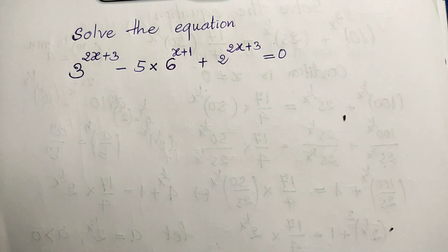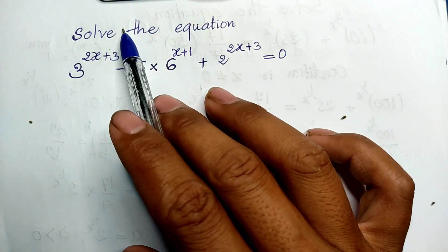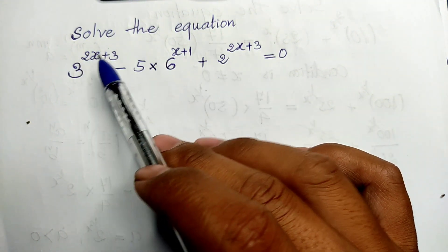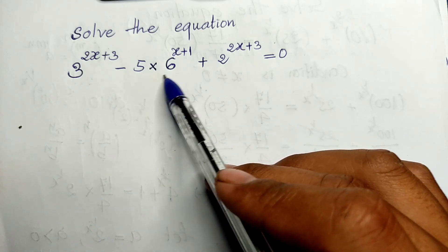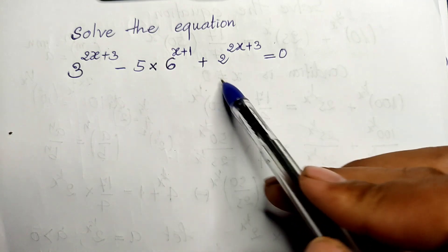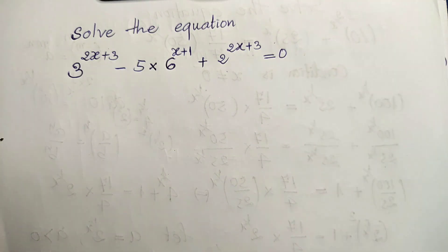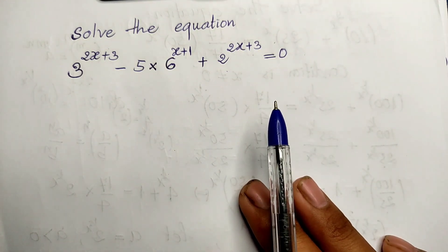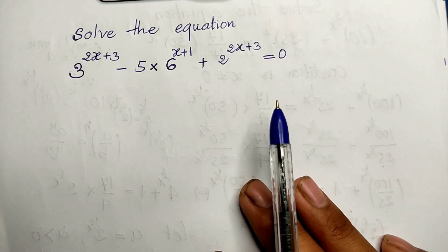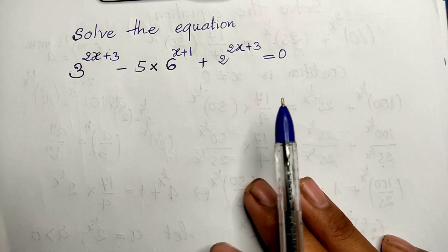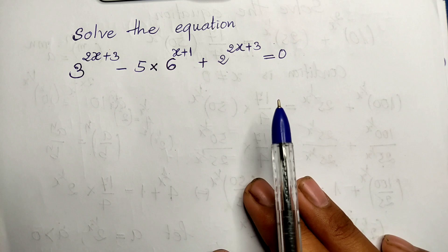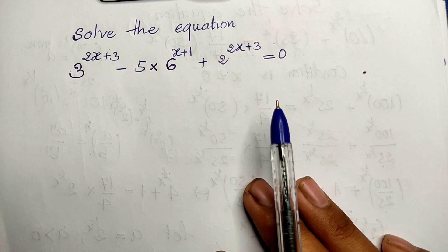Hello everyone, welcome to my YouTube channel. Today I have one exercise on paper. The equation is: 3 to the power of 2x plus 3, minus 5 multiplied by 6 to the power of x plus 1, plus 2 to the power of 2x plus 3, equals 0. If you know how to solve this, please try it first, then come back to verify your solution. Please don't forget to like and subscribe for more exciting videos. Now let's go to the solution together.